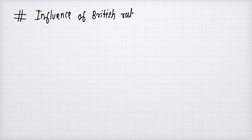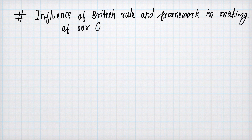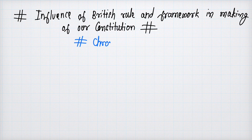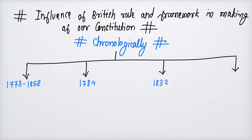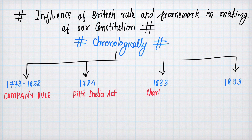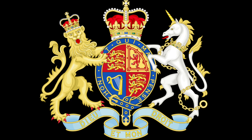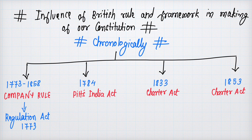You are going to see a chart that I have made — please make it in your notes as well. From 1773 to 1853, various acts came up, and till 1947, these important acts formed the roots of our constitution. Our constitution greatly depends on British governance and their style of governance.